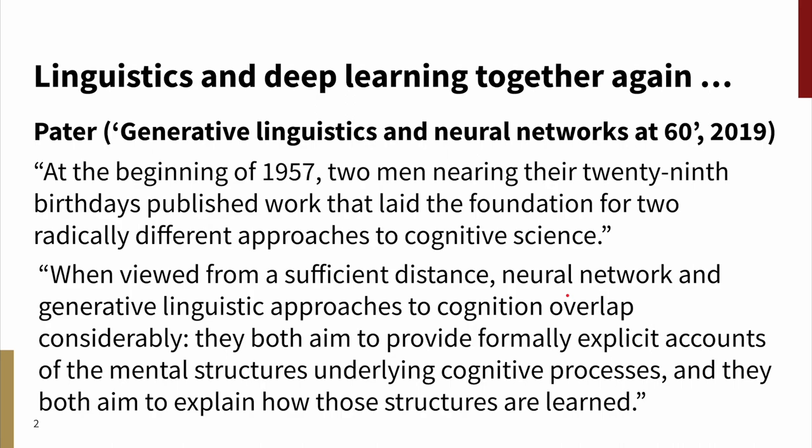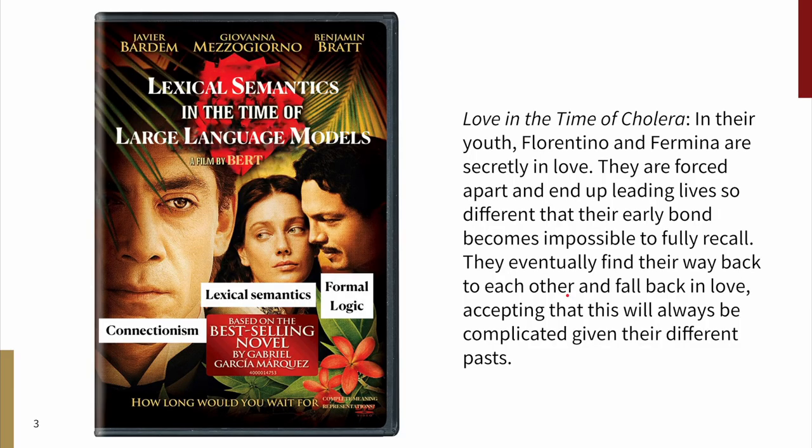He writes, when viewed from a sufficient distance, neural network and generative linguistic approaches to cognition overlap considerably. They both aim to provide formally explicit accounts of the mental structures underlying cognitive processes, and they both aim to explain how those structures are learned. So now we can understand our title as an allusion, of course, to the classic novel Love in the Time of Cholera.